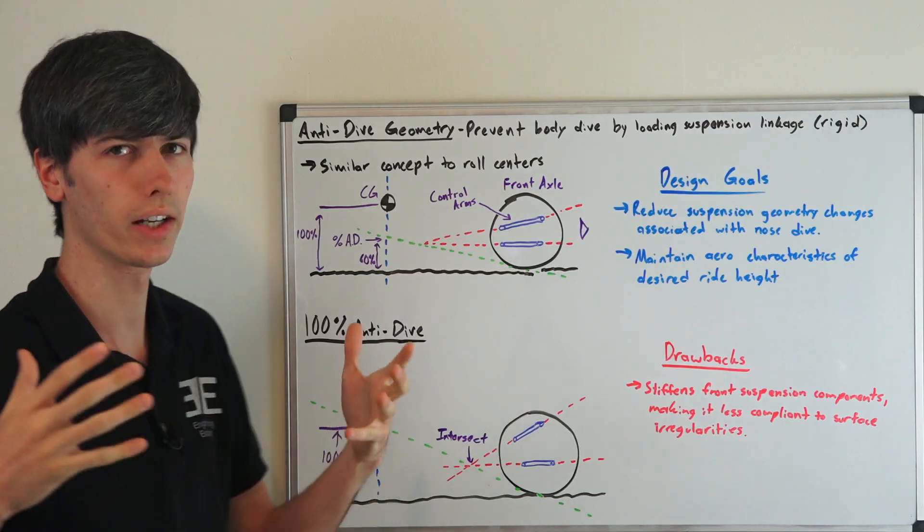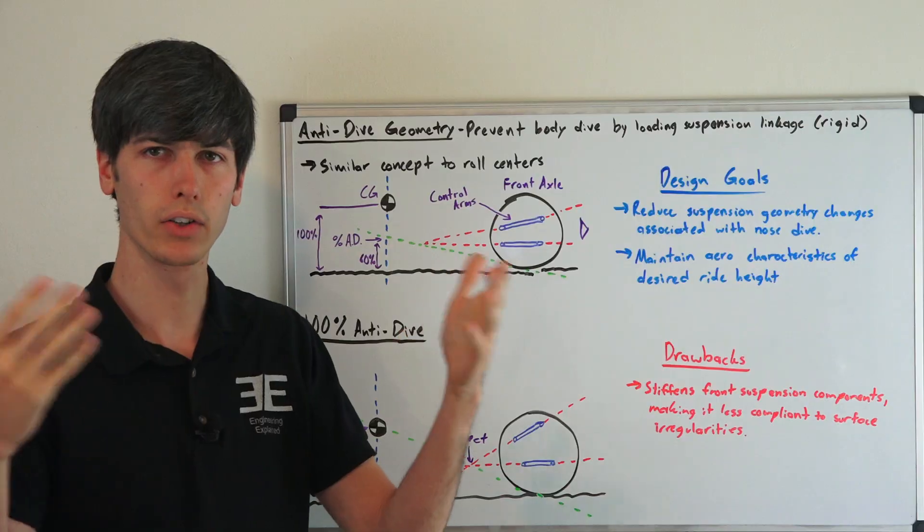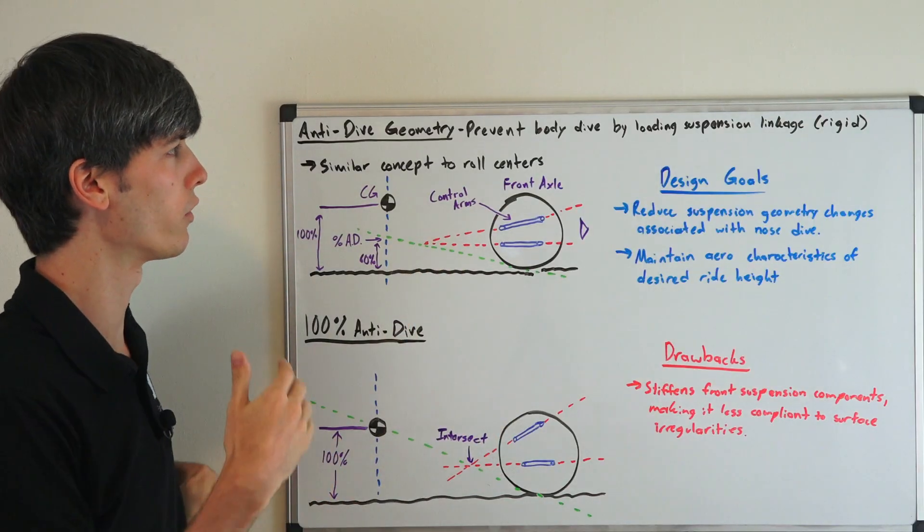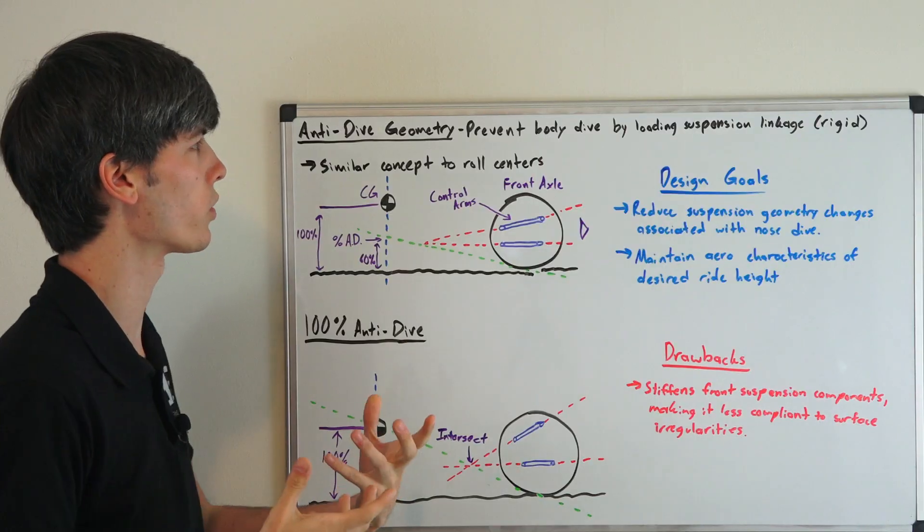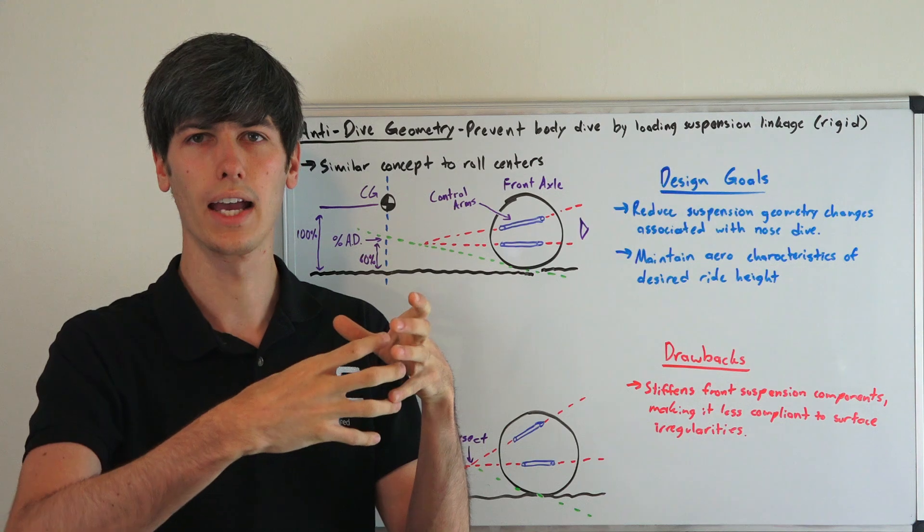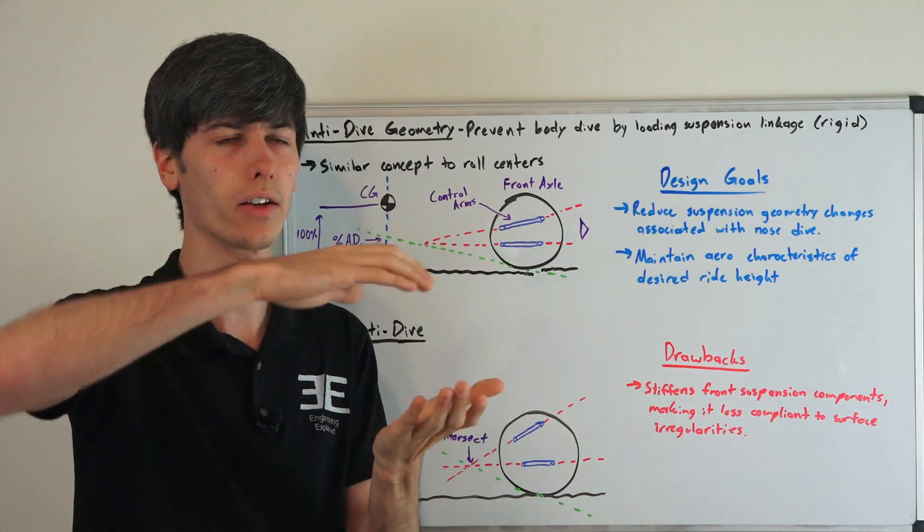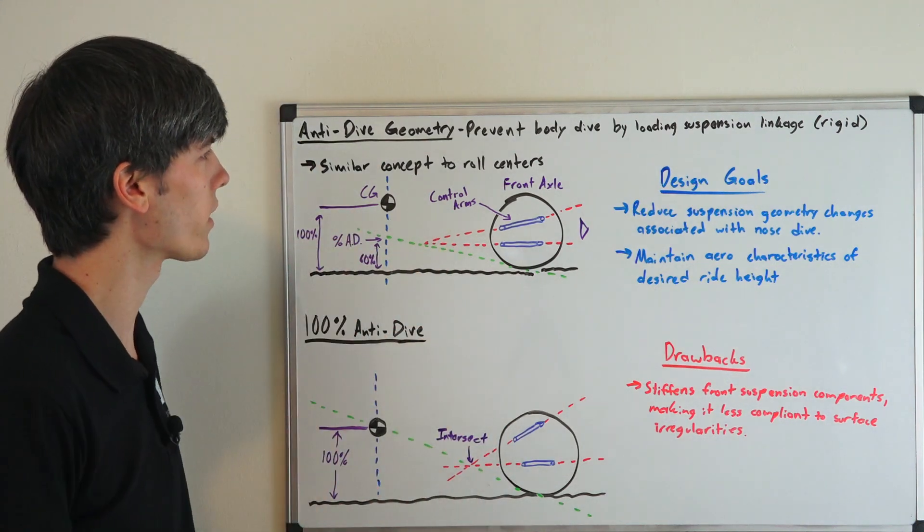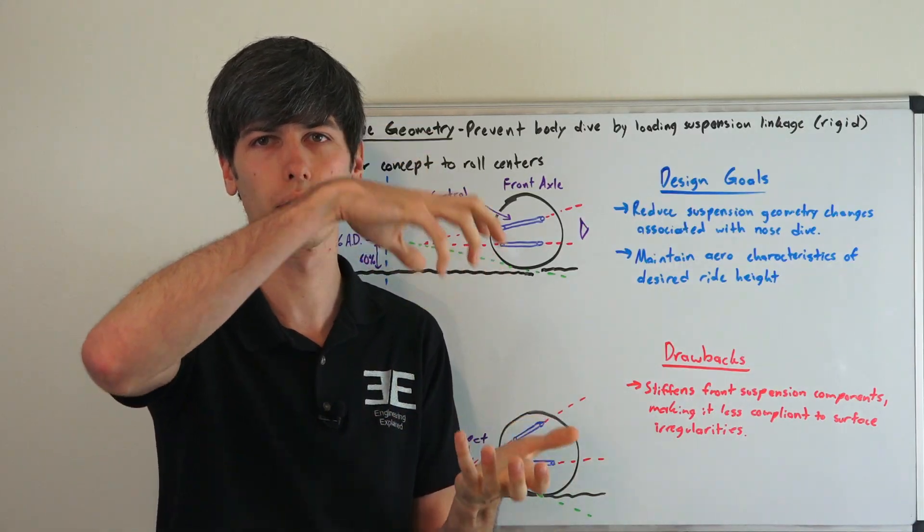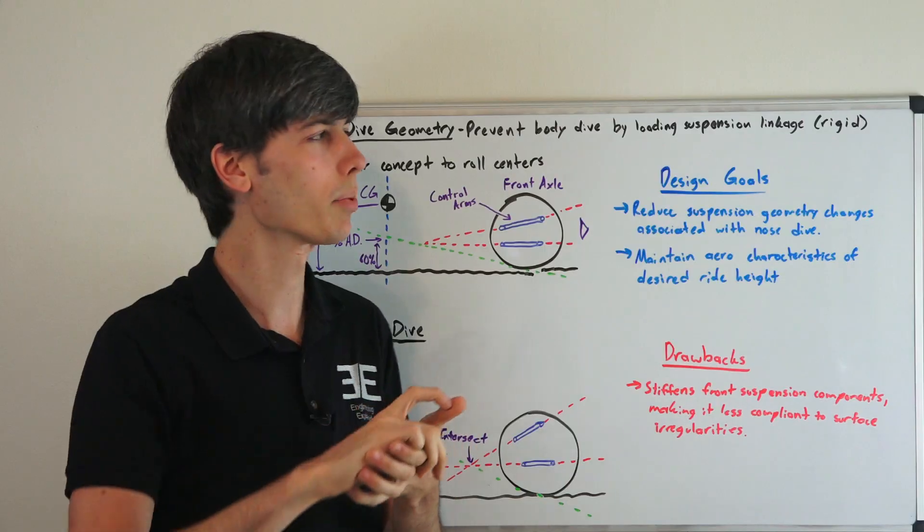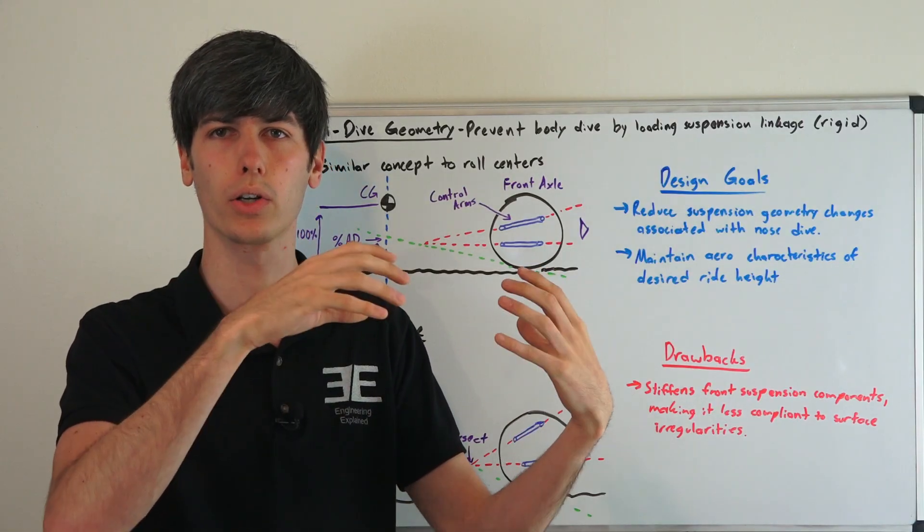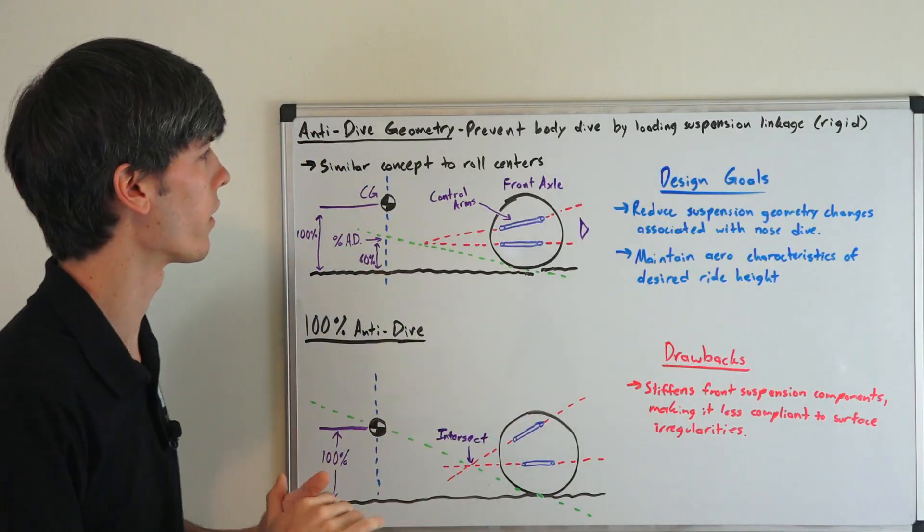Basically what you're trying to do is prevent body dive, for example when you're decelerating or braking. The front of the car is going to want to tilt forward if you don't have this anti-dive geometry. Basically what you're doing is loading your suspension, your springs and your shocks, and compressing that on the front. With anti-dive geometry, you're transferring that force instead through the suspension linkage itself, through your control arms, your bushings, things like that.